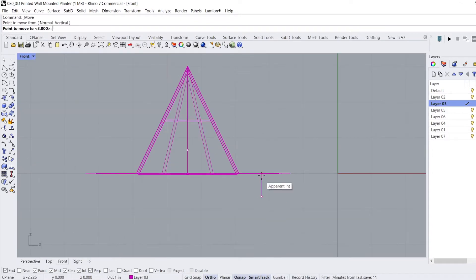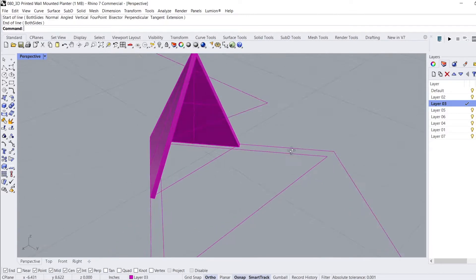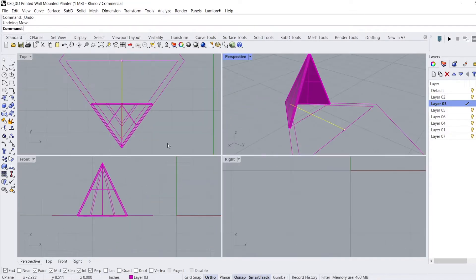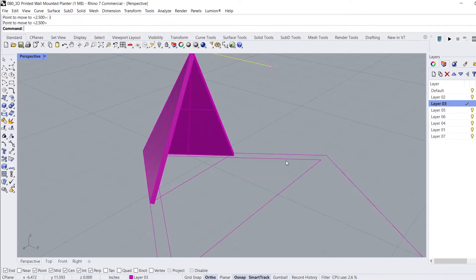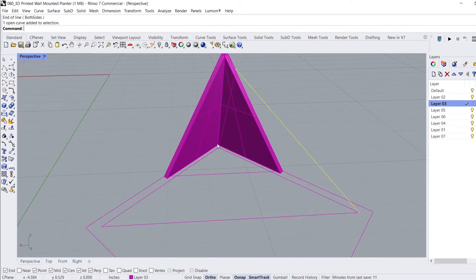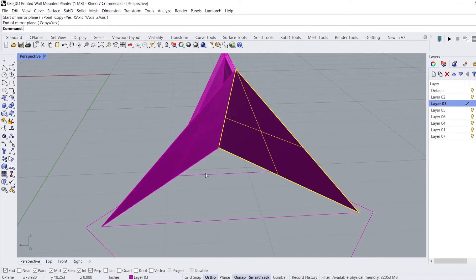To create the planter, we follow the same process and move the line vertically up 3 inches. I'll probably scale this design up to fit the maximum size of my 3D printer, but these dimensions will get us the proportions that we need for this project.